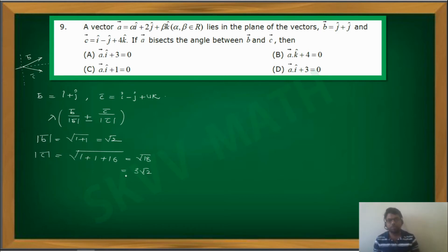Now what we will do, b bar by mod b bar plus c bar by mod c bar. So I will suppose now, a bar is equals to lambda into, what is that? B bar is i plus j divided by what is mod b bar? Root 2 plus, I will take plus now first of all, c bar, what is c bar here? i minus j plus 4k divided by what is that we have? It will be 3 root 2.